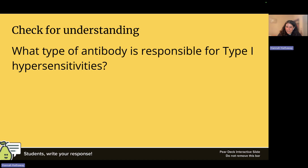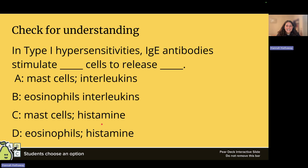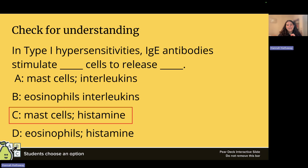Check for understanding: what type of antibody is responsible for type 1 hypersensitivities? Type 1 hypersensitivities are allergies — allergy equals IgE. In type 1 hypersensitivities, IgE antibodies stimulate mast cells to release histamine. That's why when you have allergies, you take antihistamines to stop the effects.